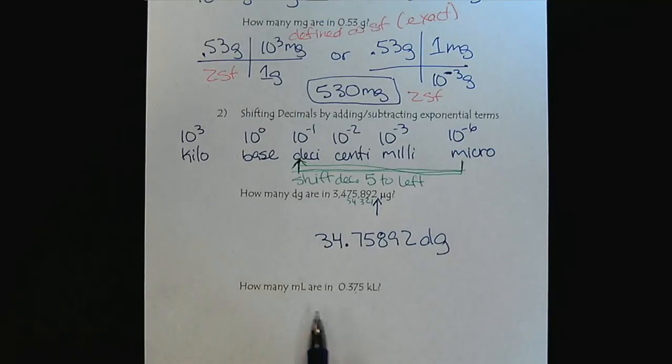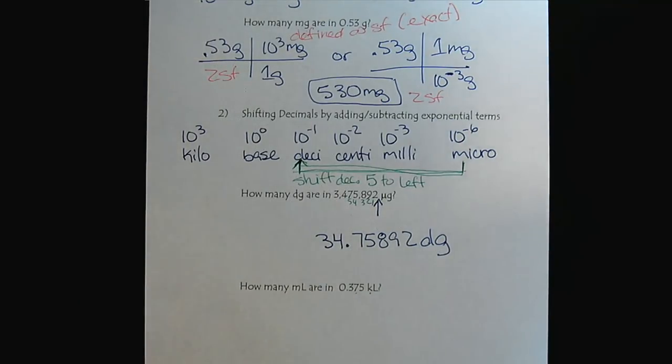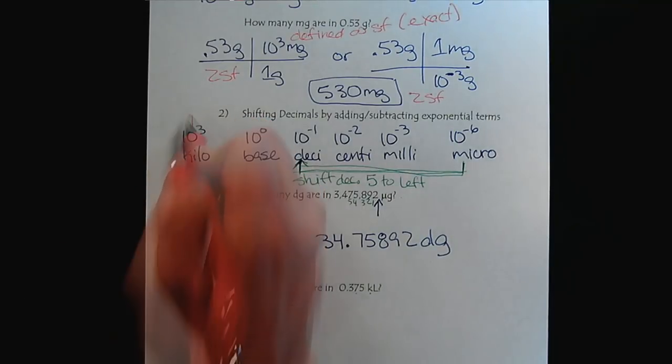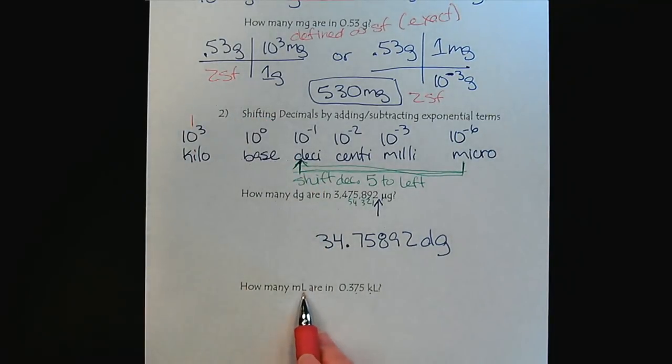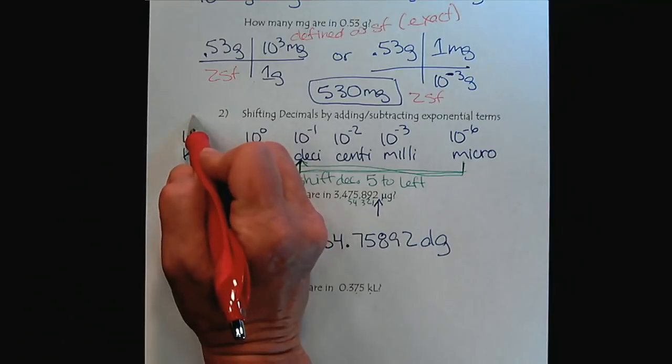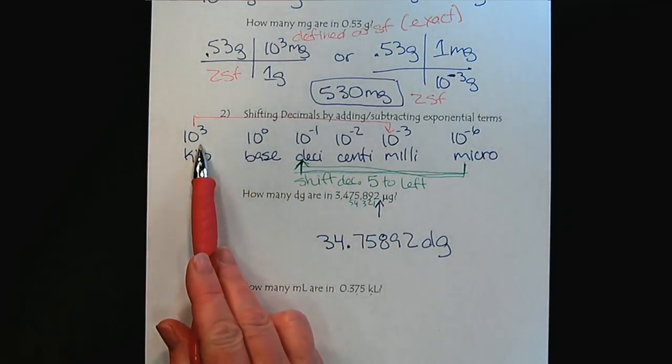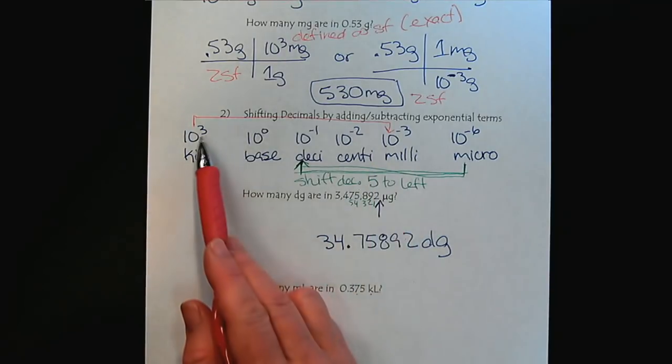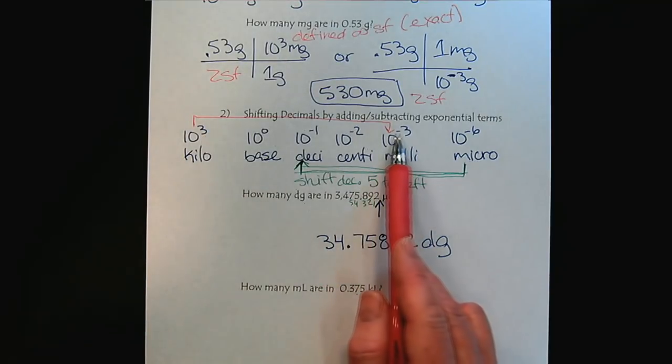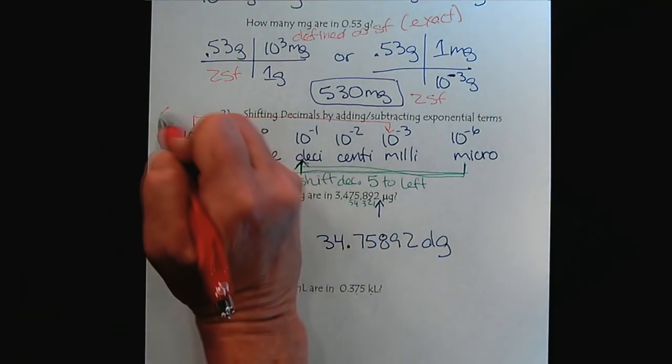Here's an example where we have kiloliters. So now we're over here at kiloliters. And we want to shift to milliliters. So this time we're going to go to the right. So to go from kiloliters to milliliters, three, and then minus three, so that would be six units. So that's a shift of six.